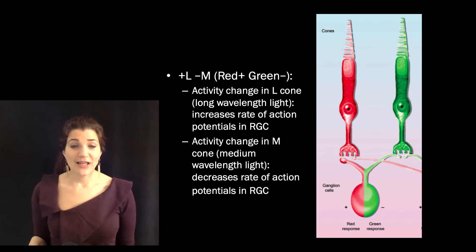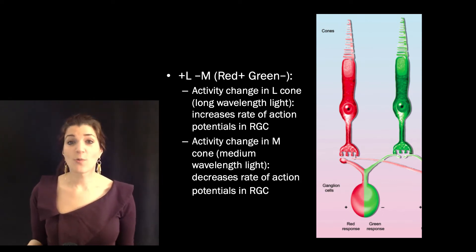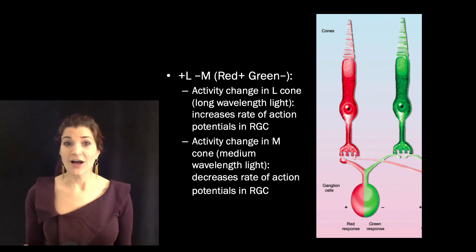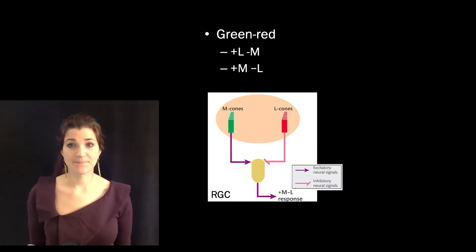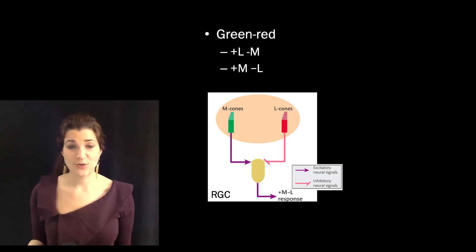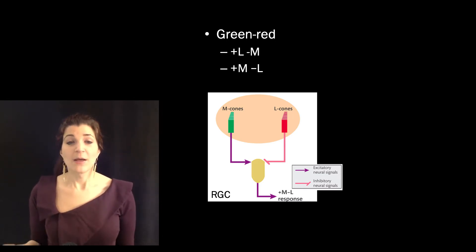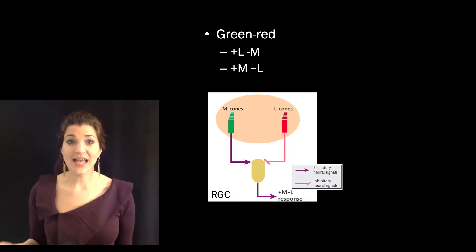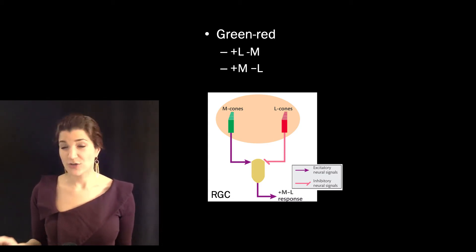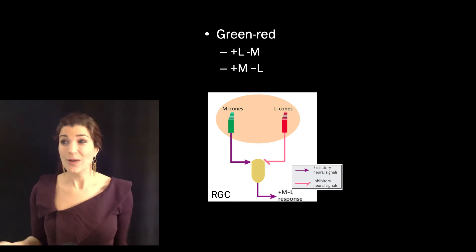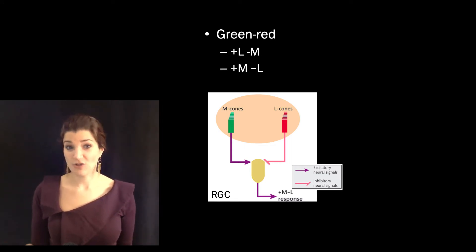There are also reverse retinal ganglion cells that code for red and green using the opposite coding scheme. This cell is an M-plus L-minus retinal ganglion cell, meaning medium wavelength light causes the firing rate to increase and long wavelength light causes it to decrease. What's neat about this is that just by measuring the rate of action potentials in that retinal ganglion cell, we can tell whether medium or long wavelength light is present.